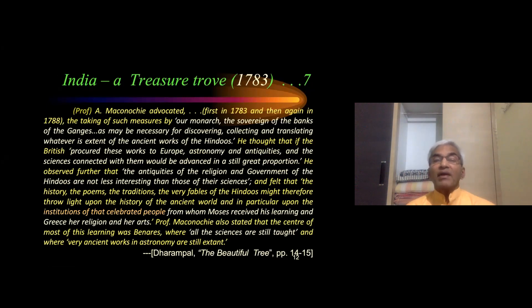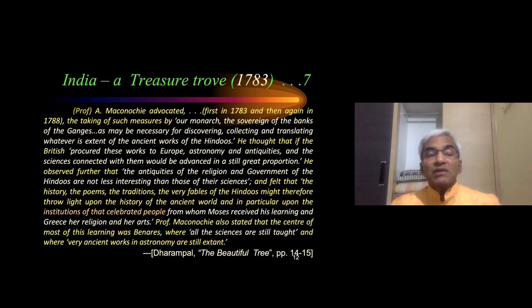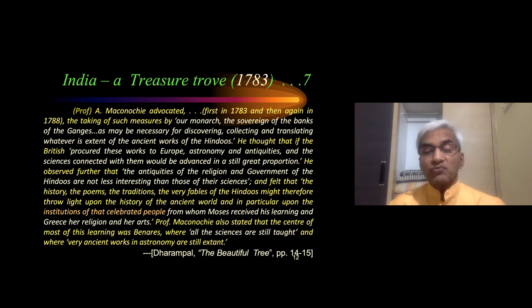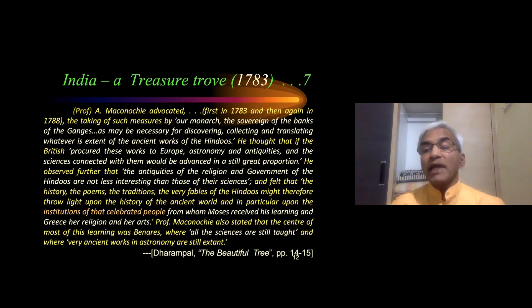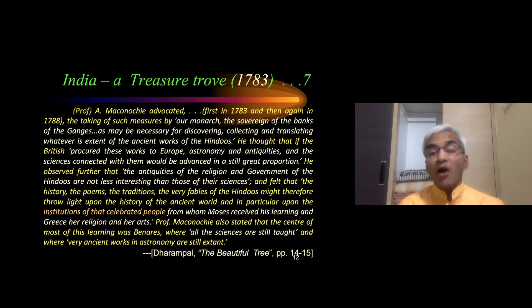Professor Mackenzie wrote two letters — one in 1783, another in 1788 — urging that their monarch take steps 'such measures as may be necessary for discovering, collecting and translating whatever is extant of the ancient works of the Hindus.' He thought that if the British procured these works for Europe, 'astronomy and antiquities and the sciences connected with them would be advanced in a still greater proportion.' He said the antiquities of the religion and government of the Hindus are not less interesting than those of their sciences. This was 1783 — complete appreciation and admiration of Indian knowledge systems.